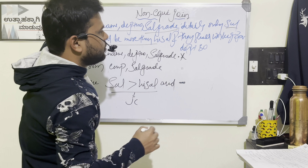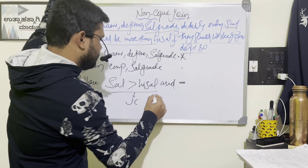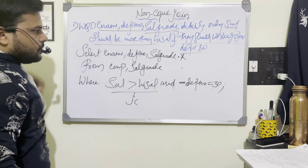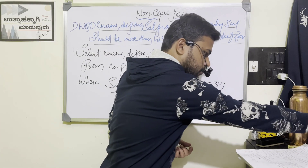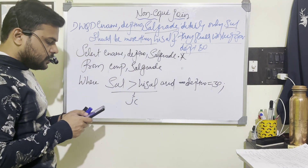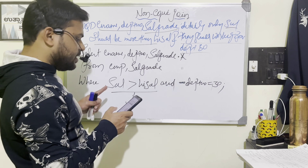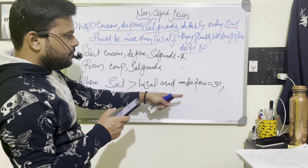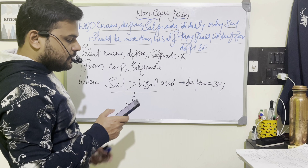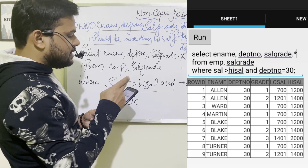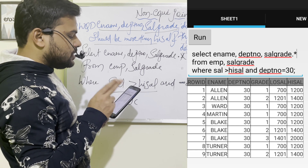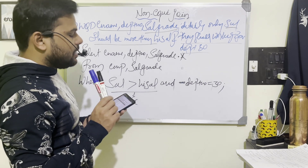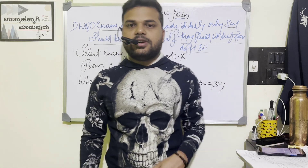Let me execute this query: SELECT ename, dptno, sal_grade.star FROM emp, sal_grade WHERE salary greater than high_sal AND department number equal to 30. Click on run — I am getting employee name, department number, and sal_grade details: grade, low_sal, high_sal. The condition department number 30 is applied — I am displaying only those employees working in department number 30. This is all about today's class. Thank you for watching this video.